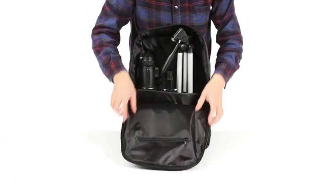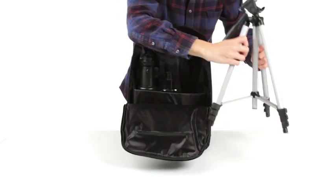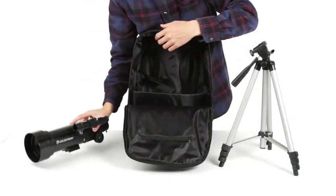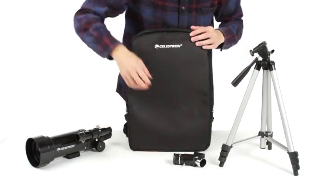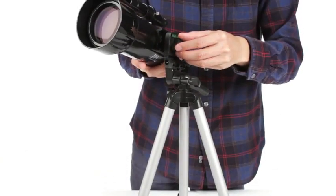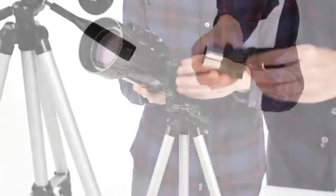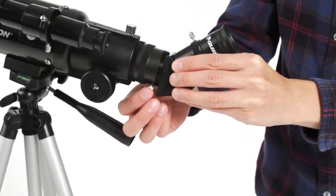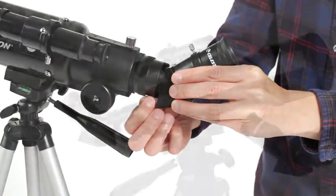When you arrive at your destination, assemble the telescope and you'll be ready to observe in minutes with no tools necessary. The adjustable tripod can extend to full height or collapse for use on a picnic table or bench for more comfortable viewing.